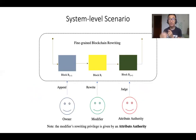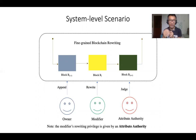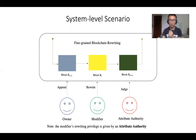Let me show you the system-level scenario. As you can see, there are three different types of parties: user, modifier, and authority. Any user in the system is allowed to record anything they want into the blockchain. Only a small number of modifiers are allowed to rewrite the blockchain because they have rewriting privileges. These rewriting privileges are given by the attribute authority. Only the attribute authority is allowed to handle the dispute over the modified transactions.